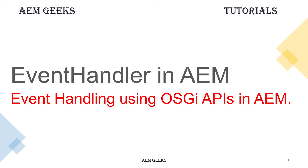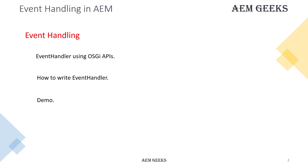In this tutorial I'll talk about event handling using OSGI APIs. If you create any project using Maven archetype you will get a sample event handler resource handler using these APIs in the code. I'll talk about how to write an event handler using OSGI API, explain the code, how you can define what kind of event it will be listening to, and then we'll have a proper demo with the different use cases.